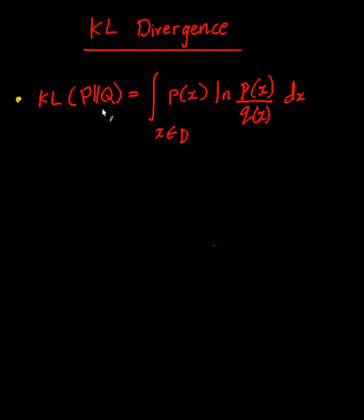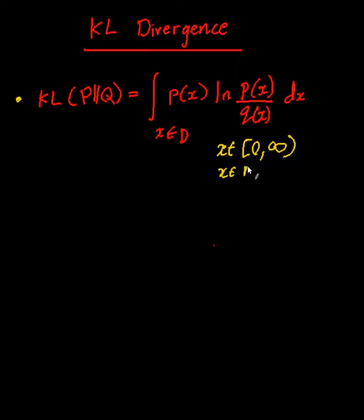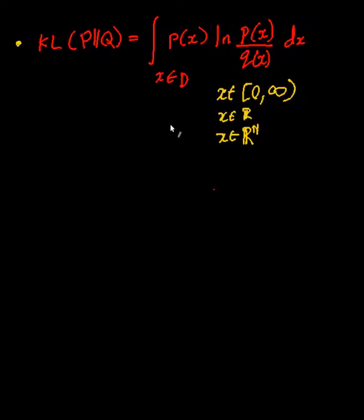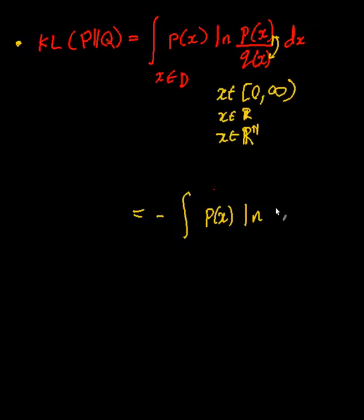The definition of KL divergence of P to Q is given by the integral of P(x) times ln(P(x)/Q(x)) dx, where x is integrated over a certain domain — it can be 0 to infinity, all reals, or all of R^n. I'm going to rewrite this KL divergence by taking the ln as a negative log, switching those two, so this is the same as negative P(x) ln(Q(x)/P(x)) dx.